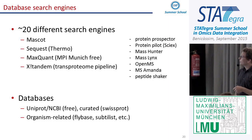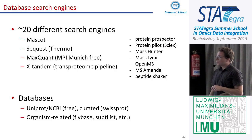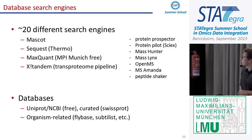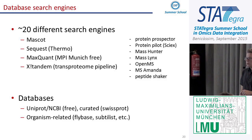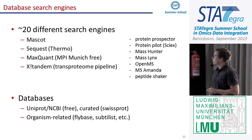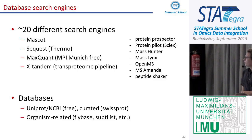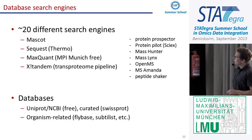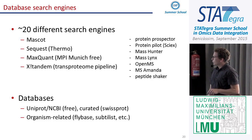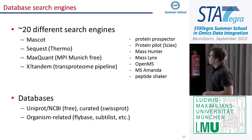At the moment there are around 120 different search engines. In our lab we use Mascot and mainly MaxQuant, which we will look at tomorrow. MaxQuant is very often updated, freely available, and is currently really the standard. Databases can easily be obtained from UniProt, NCBI, or organism-specific websites.